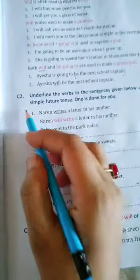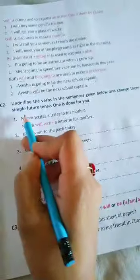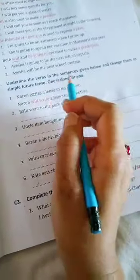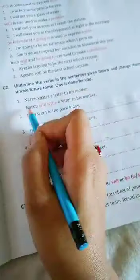Let's start the exercise. Underline the verbs in the sentences given below and change them to simple future tense. One is done for you. What we have to do? We have to first underline the verbs and then we need to change the whole sentence by changing the verbs into simple future tense. Naren writes a letter to his mother. So: Naren will write a letter to his mother.